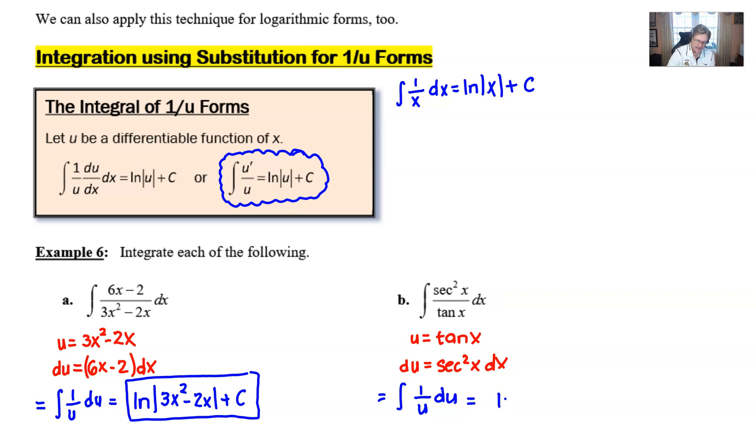And as always, we have natural log absolute value of u. Tangent could run the risk of being negative at times, so we want to make sure that we place it inside of those absolute values. And there you go.